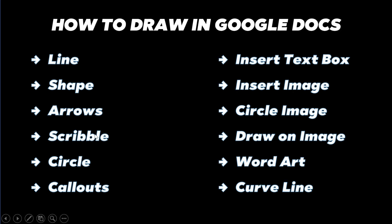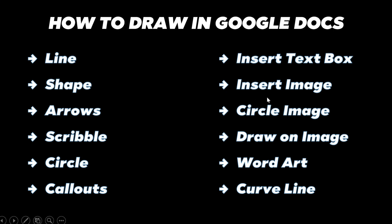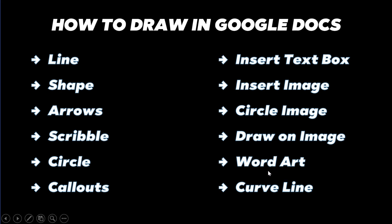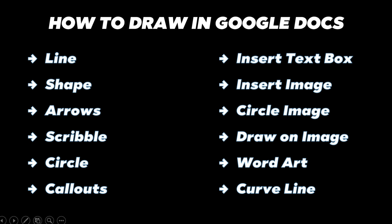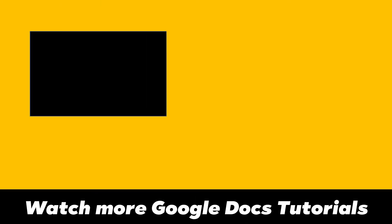I've tried to cover everything: how to draw lines, shapes, arrows, scribble, circles, callouts, insert text boxes, insert images, draw on images, Word Art, and curved lines. If there's anything else you want to ask, leave it in the comments below. I've made many Google Docs tutorials — check out that playlist. Thanks for watching, like, share, and subscribe.